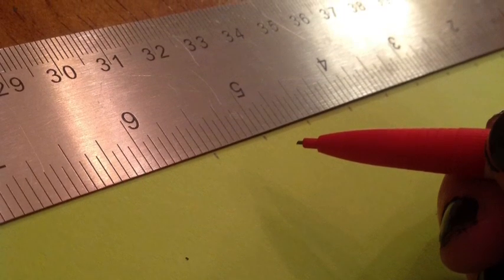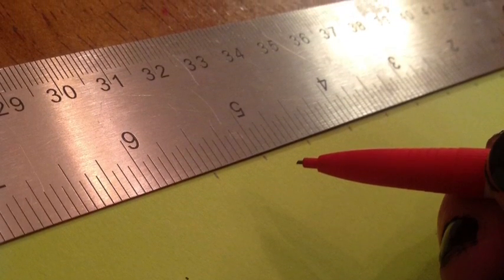First you have to make a mark every half inch down both sides of your folder. Then connect those marks with a straight line and cut out your eight strips.